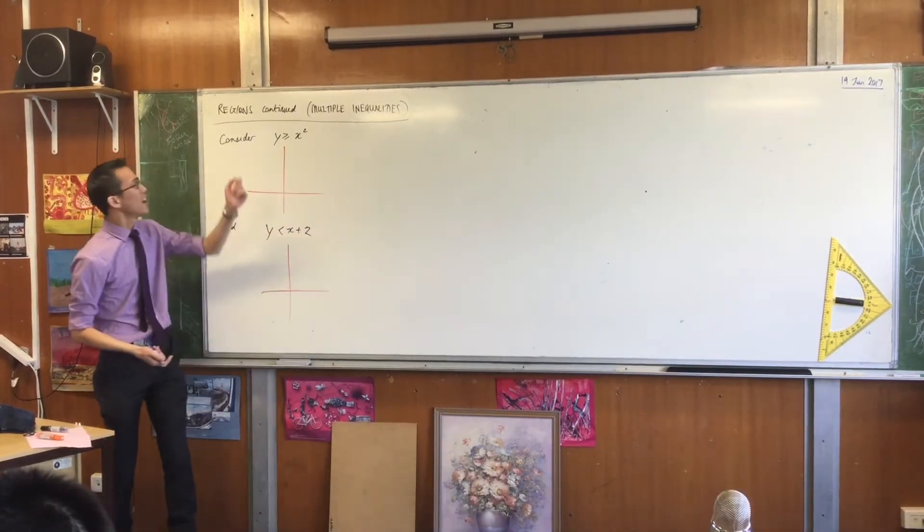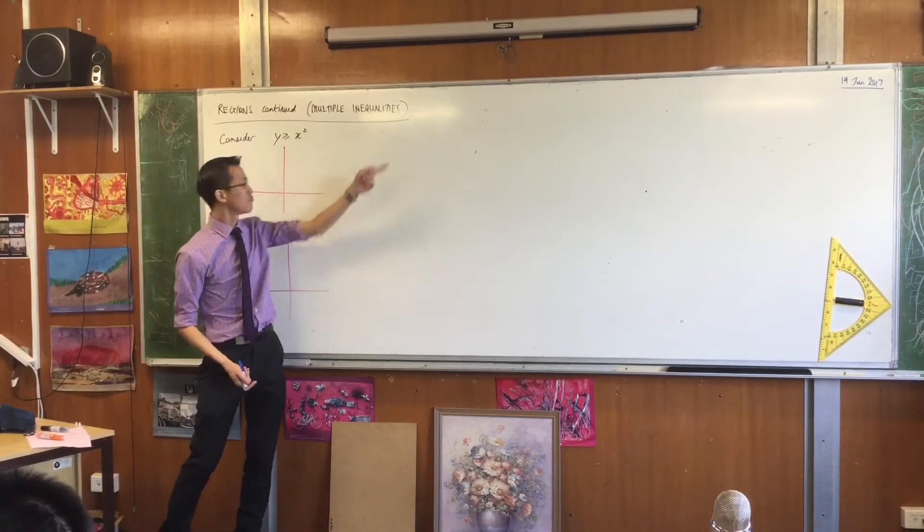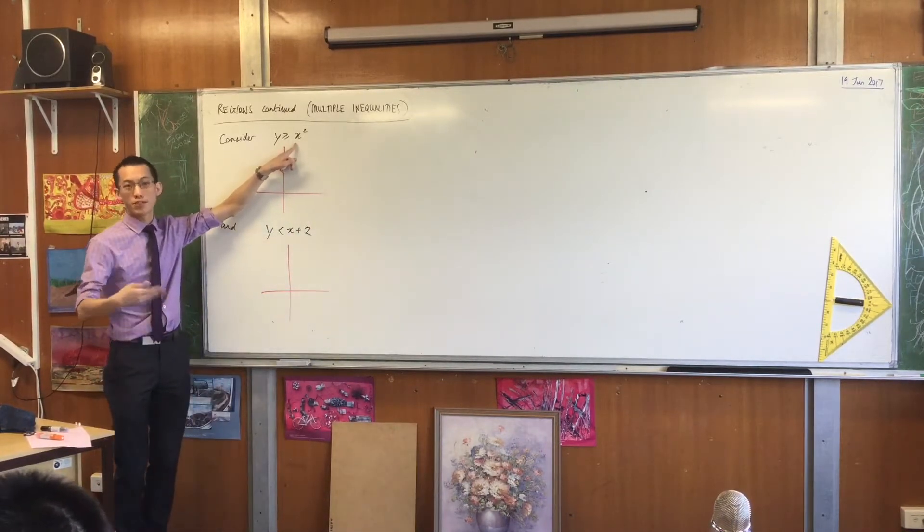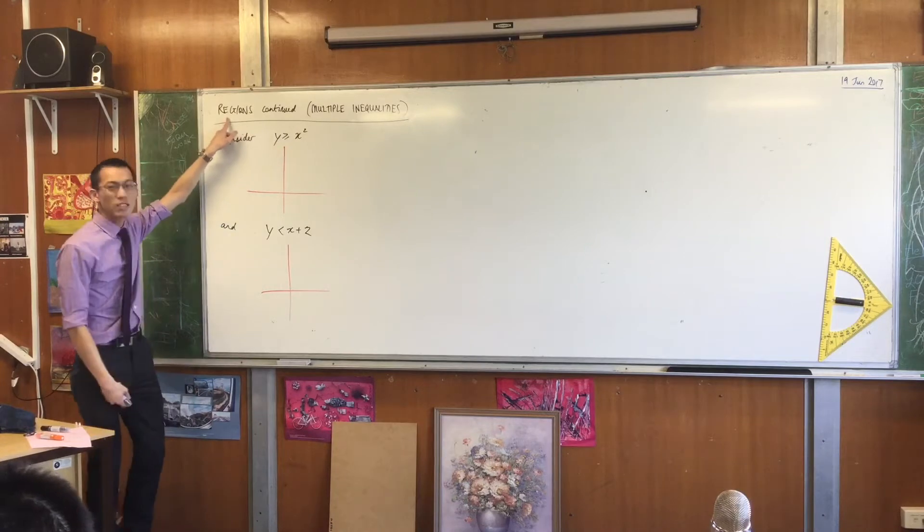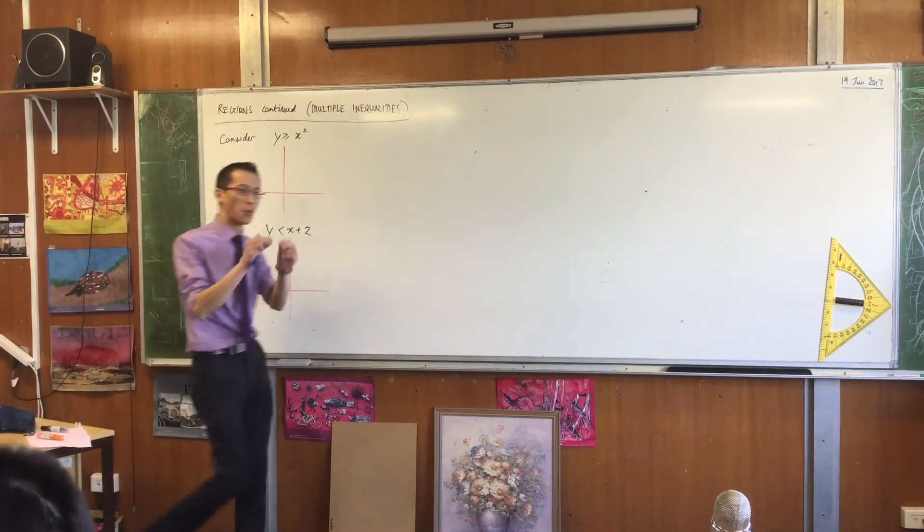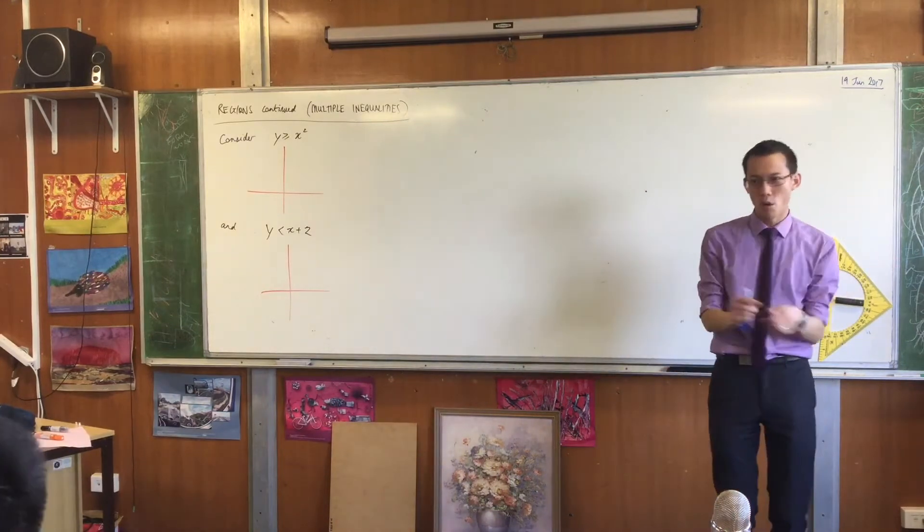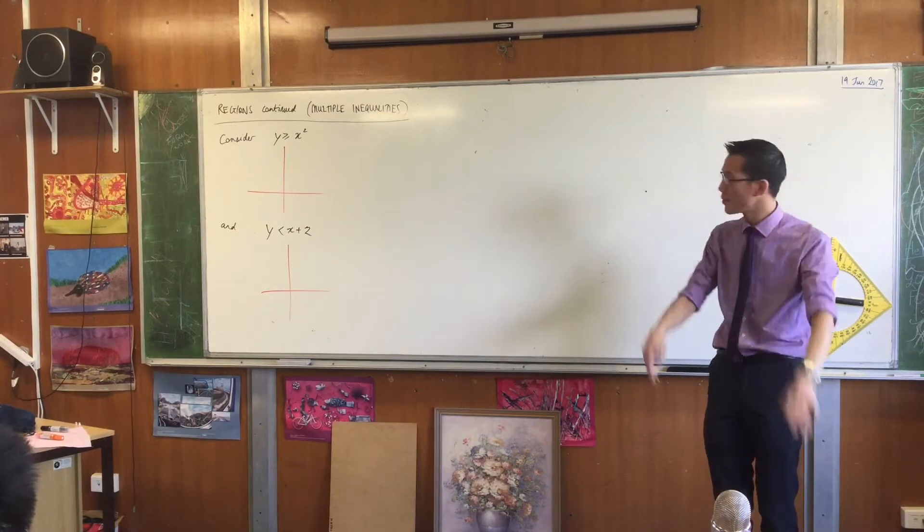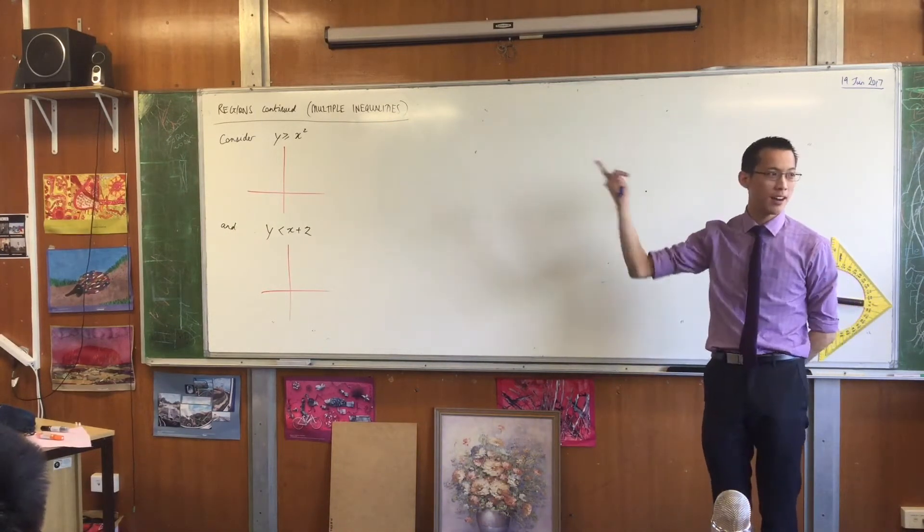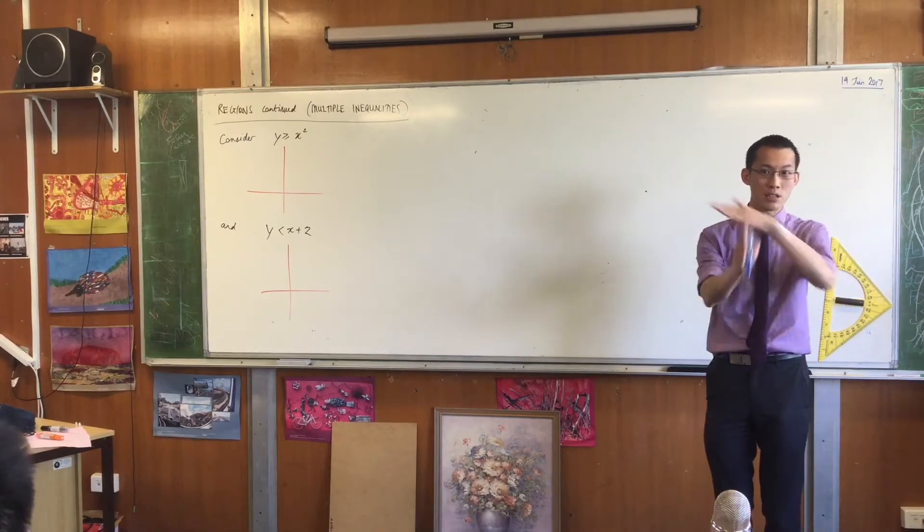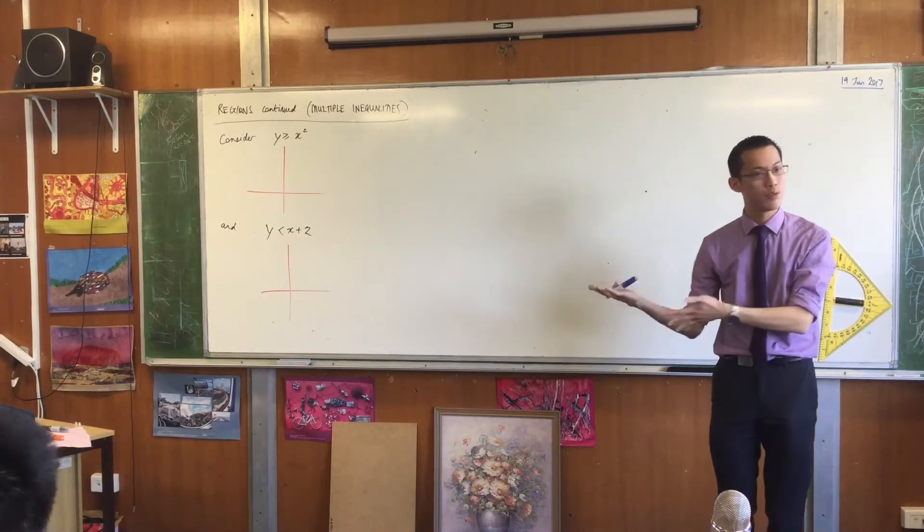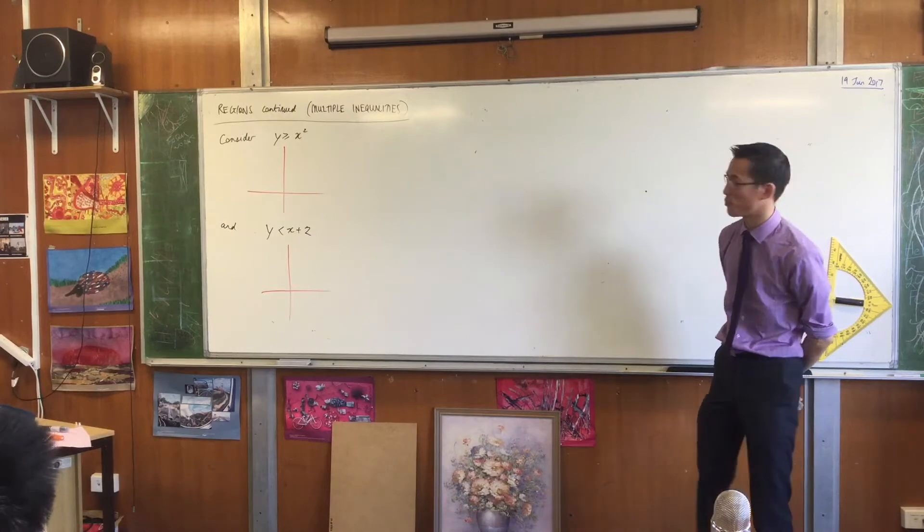Yesterday we had this idea of taking an inequality and representing it visually with a region. We've taken one-dimensional inequalities, put them on the number line. But when you've got two dimensions here, you need the coordinate axes. You need two dimensions for your two variables, and that's why we use the Cartesian plane.